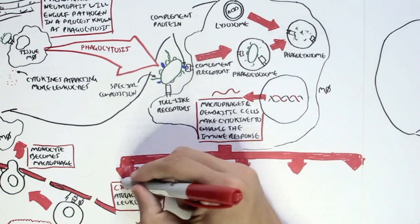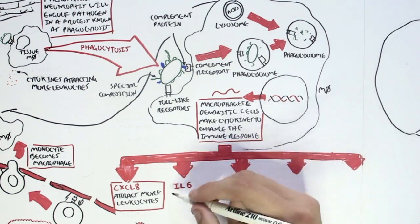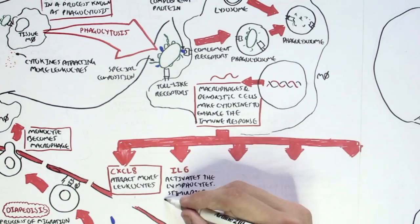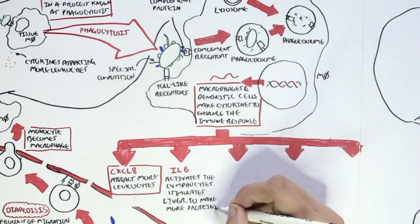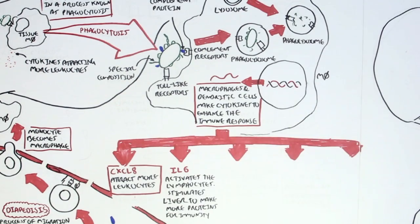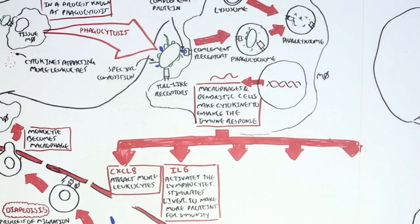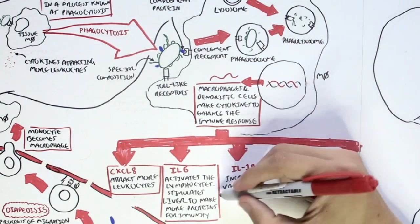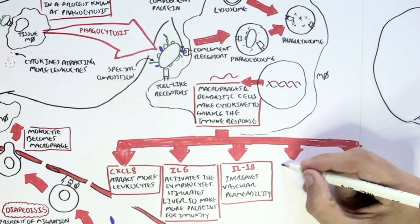Also, interleukin-6, which activates the lymphocytes, the B and T cells, and stimulates the liver to make more proteins for the immune response. And it will also secrete cytokines interleukin-1b, which increases vascular permeability, allowing more leukocytes to enter the specific tissue.